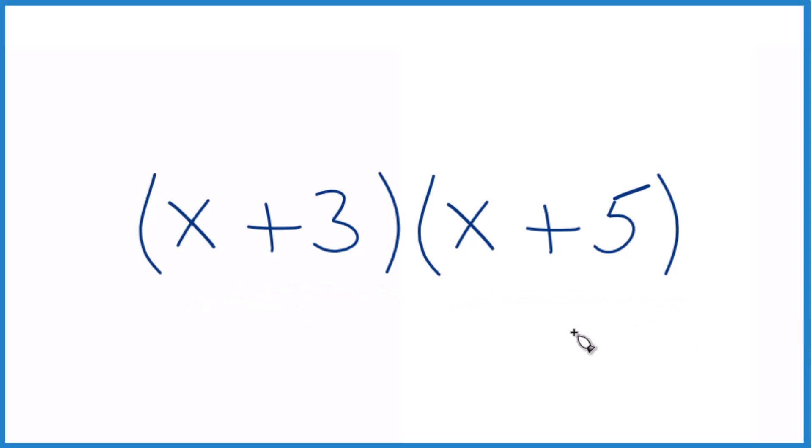So here's how we do this. We can use the distributive property, x times everything here, and then 3 times everything here. And often you'll see this called the FOIL method.